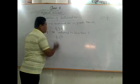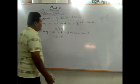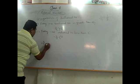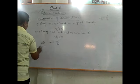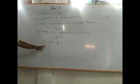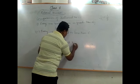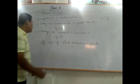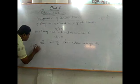Now suppose we are given two rational numbers: 3 by minus 4 and minus 5 by 6. Which one is greater? We need to compare these two rational numbers. First, we need to make the denominator positive. For 3 by minus 4, we multiply both numerator and denominator by minus 1, giving us minus 3 by 4. The other number, minus 5 by 6, stays as minus 5 by 6.